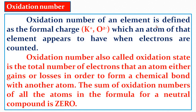Now let us come to the last topic of this lesson: Oxidation Number. The oxidation number of an element is defined as the formal charge — for example, K⁺ or O²⁻ — which an atom of that element appears to have when electrons are counted. Oxidation number is also called oxidation state.